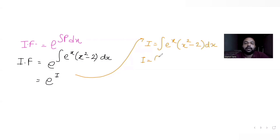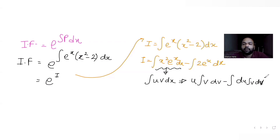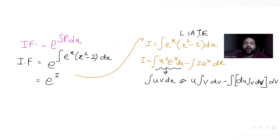Splitting the integral: I = ∫x²·e^x dx − ∫e^x dx. To solve ∫x²·e^x dx we use integration by parts (∫u·v dx = u·∫v dx − ∫(du·∫v dx) dx). Using ILATE, x² is algebraic so it becomes u, and e^x is exponential so it becomes v.